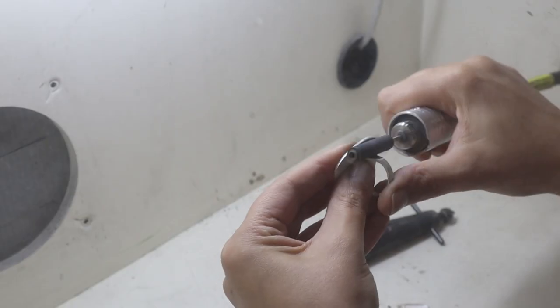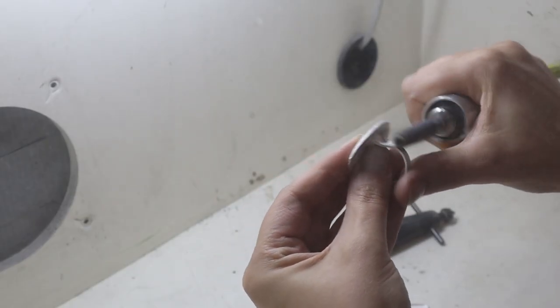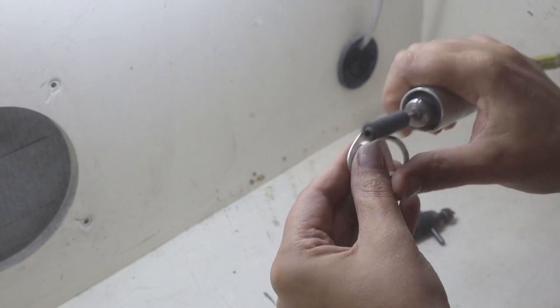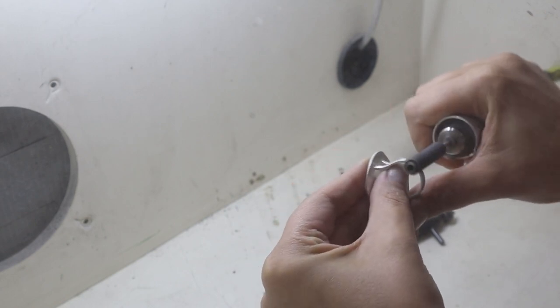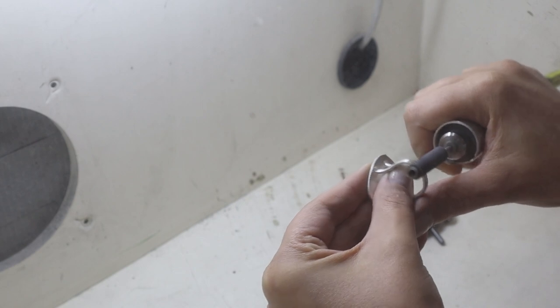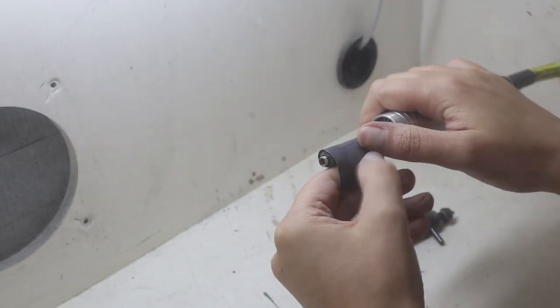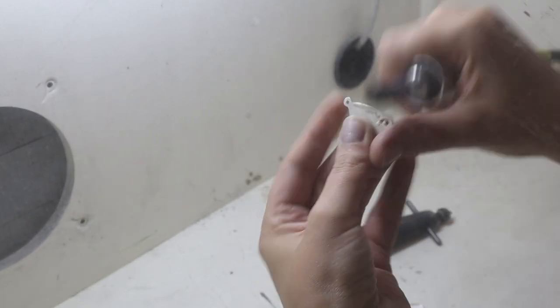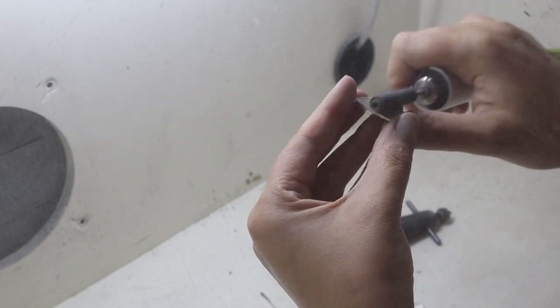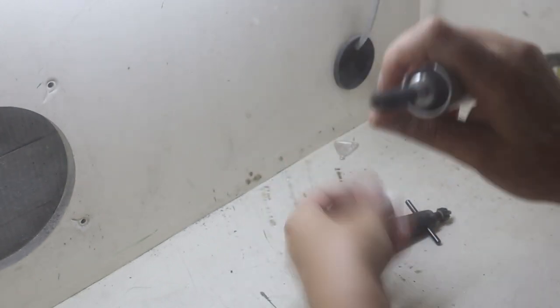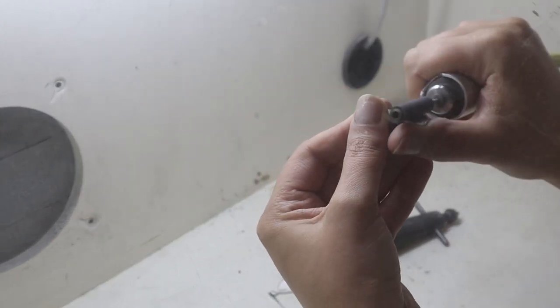I'm using 400 grit sandpaper. Inside the ring there are some strips which I don't need, so I'm trying to remove all of these.